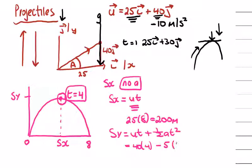So you're going to get 160 minus 80. The max height in this case is 80 meters.